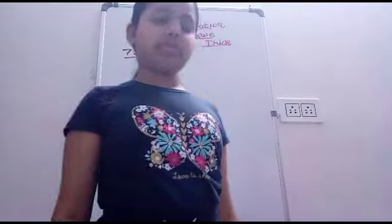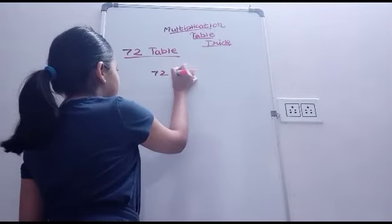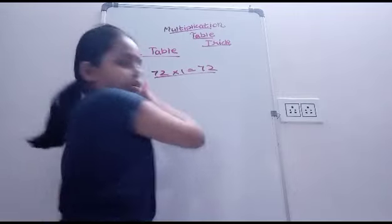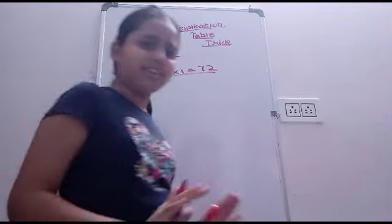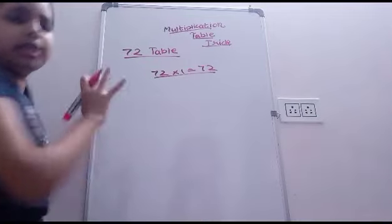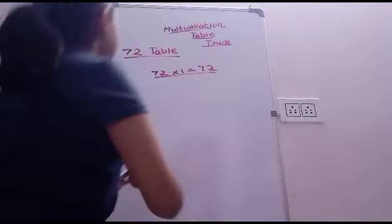Okay, now this is a very easy trick, very easy to write and very very easily to remember this trick also. Now what happens, 72 multiply by 1 is 72, you know this right? It is very easy, not complicated anything. Anything multiply by 1 is the same number. Okay, next.